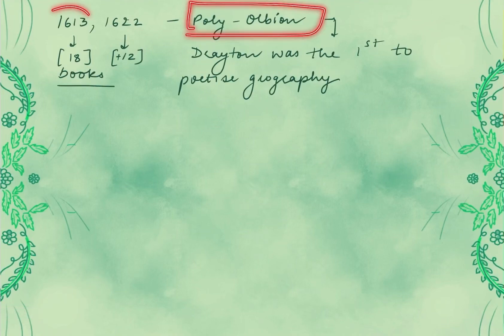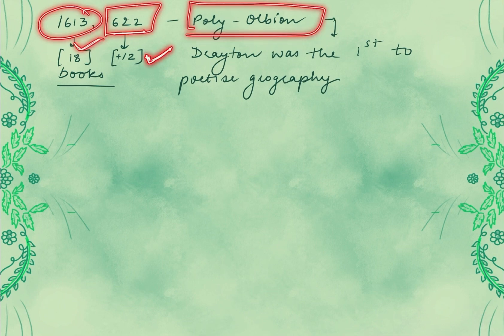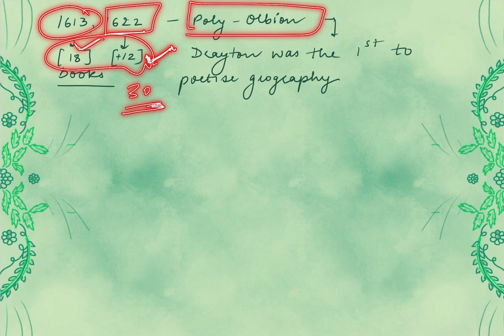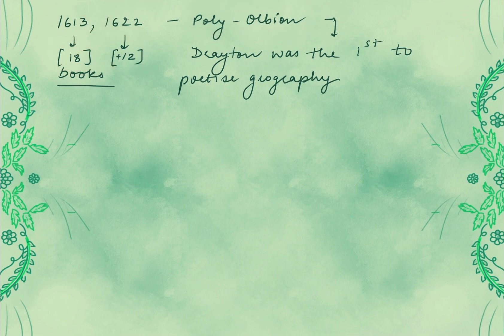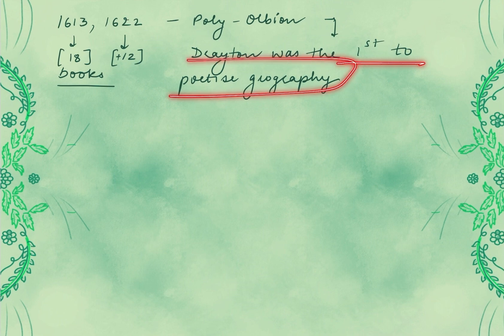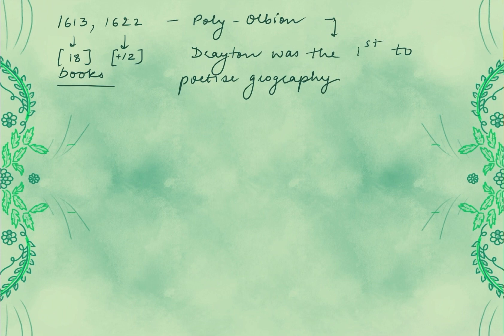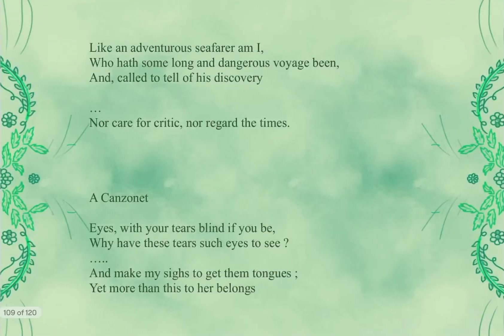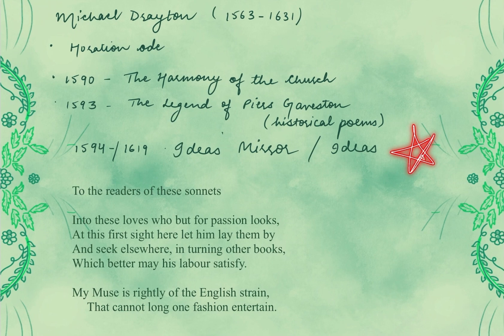Now let's come to 'Poly-Olbion.' In 1613, 18 books of it were published, and in 1622, 12 more books were published as a second part. So in total, there are 30 books — 30 books in one work. This work is about the geography of Britain. And for this very reason, Michael Drayton is said to be the first to poetize geography — he wrote geography in the format of a poem. So remember: 'Poly-Olbion' is an important work, but 'Ideas Mirror' or 'Ideas' is the most important work among all of these.